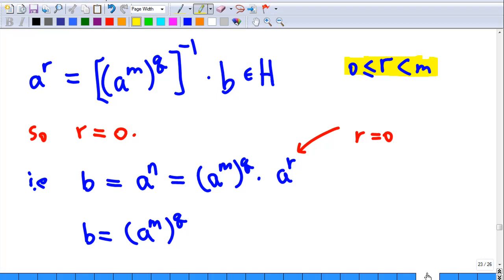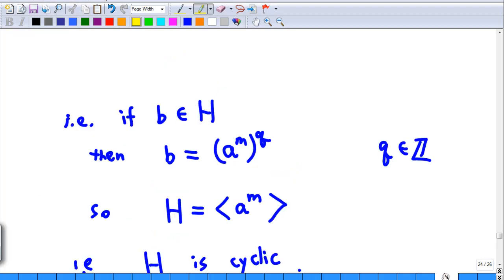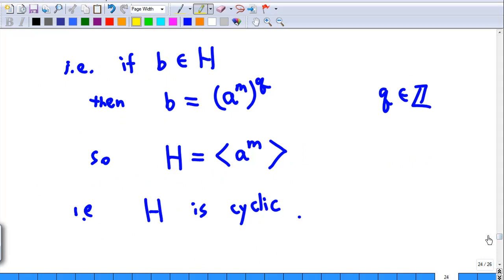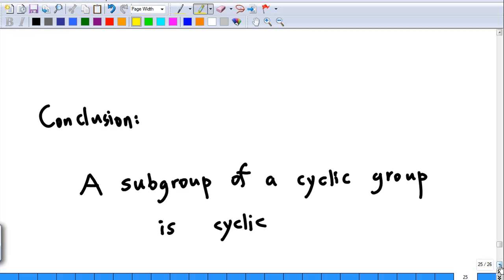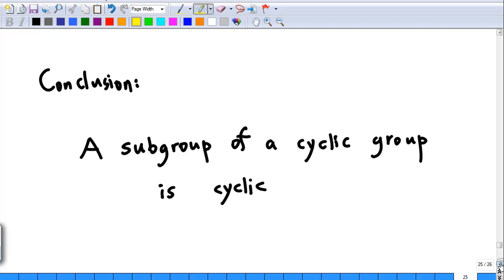That means that every element b in H is the power of a power m. So H is the cyclic group generated by a power m. Therefore, H is cyclic. So we have our conclusion: a subgroup of a cyclic group is cyclic. Let's finish the proof.